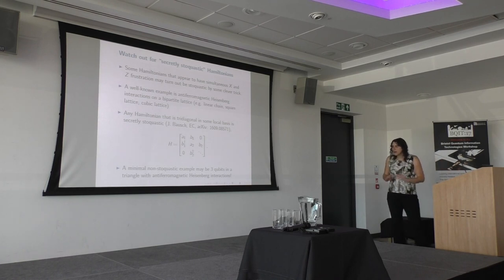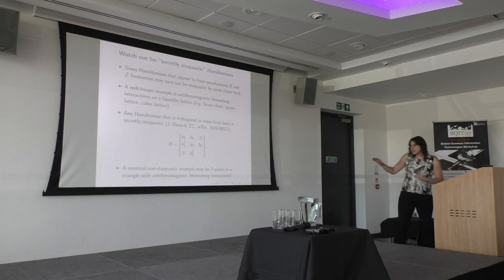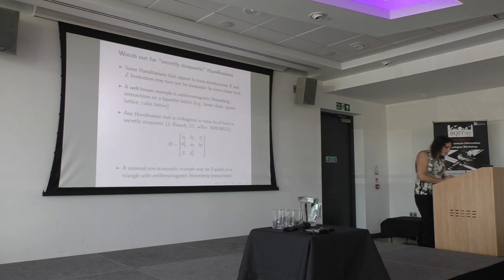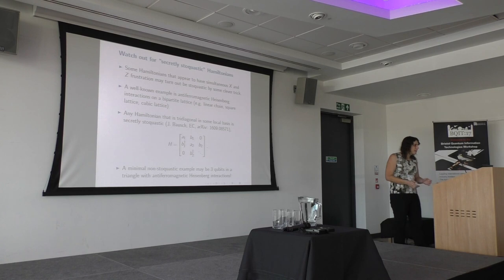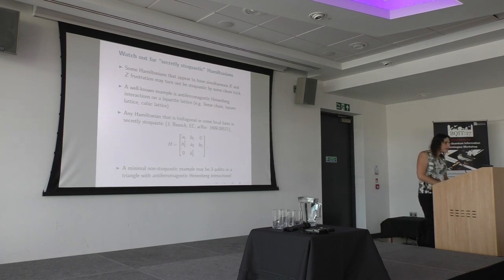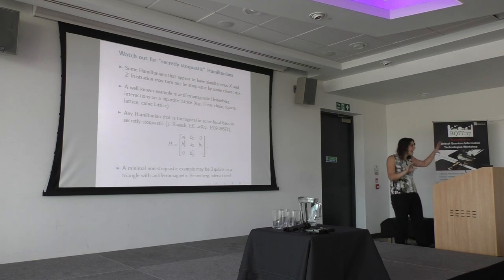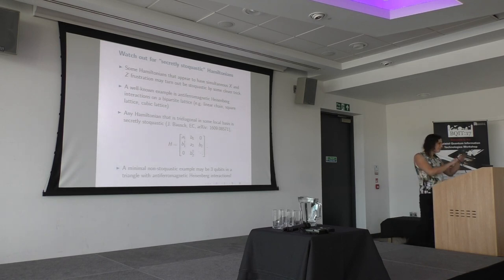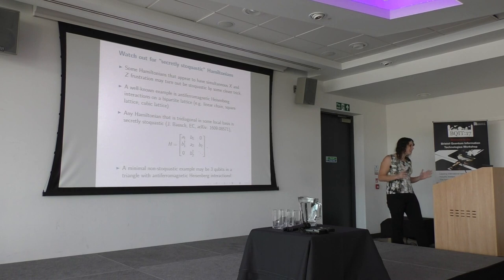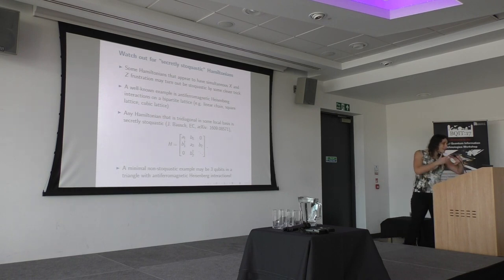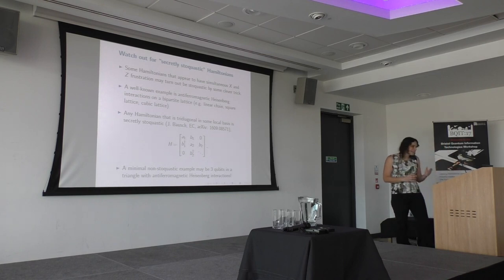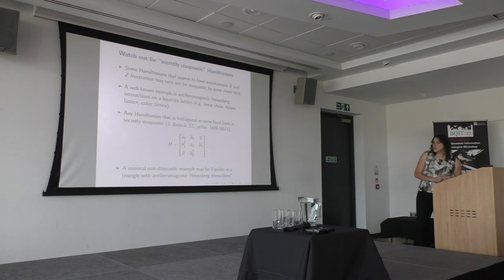A minimal example that would be really interesting to see would be three qubits in a triangle with anti-ferromagnetic interactions between them — with controllable interactions, which is the whole point. Condensed matter theorists might cite a Kagome lattice with anti-ferromagnetic interactions found in some material, but we really want controllable interactions on a small system of qubits with inherent frustration.